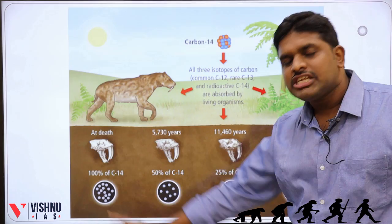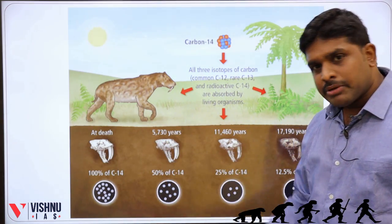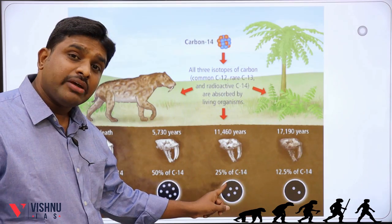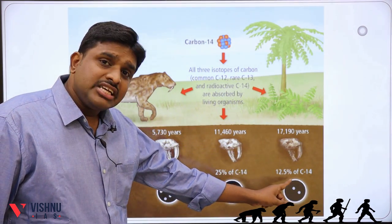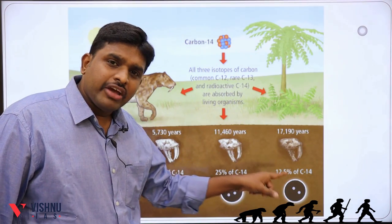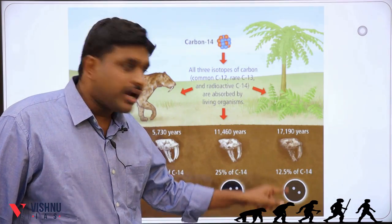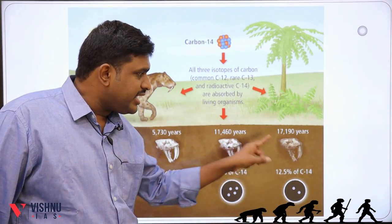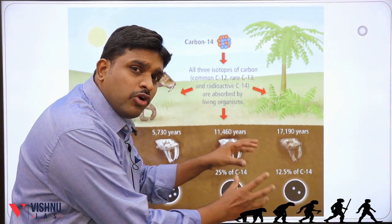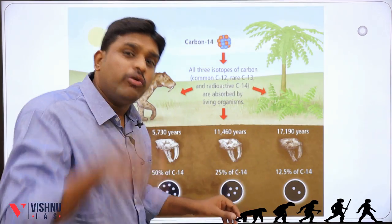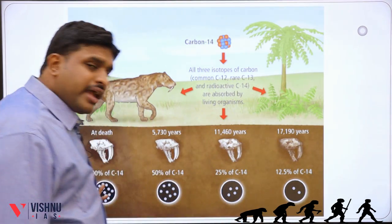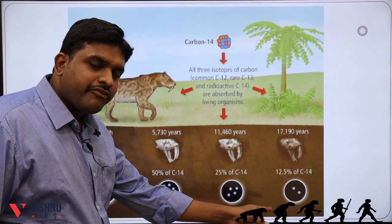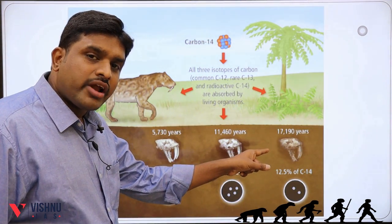At death it is 100% C14. After 5,730 years it is 50% C14. After 11,460 years it is 25% C14. After 17,190 years it is 12.5% C14. So when only 12.5% of C14 is present in the dead body — meaning only 12.5 grams instead of the original 100 grams — it shows that the specimen is 17,190 years old.